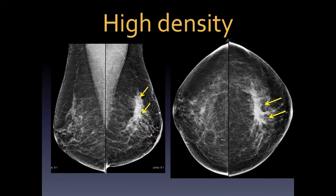Typically benign calcifications include skin, vascular, coarse or popcorn-like, rod-like, round, lucent-centered, eggshell or rim, milk of calcium, suture, and dystrophic. Here are examples of suture and dystrophic calcifications in a woman who previously had breast surgery — we don't need to worry about those. Skin calcifications are lucent-centered — you'll see small areas of lucency within the calcifications corresponding to where the hair follicle comes through. Also in this case is a very coarse popcorn-like calcification from a fibroadenoma — again, nothing to worry about.